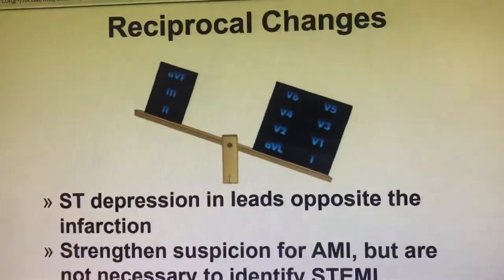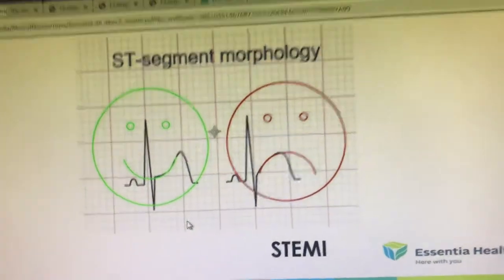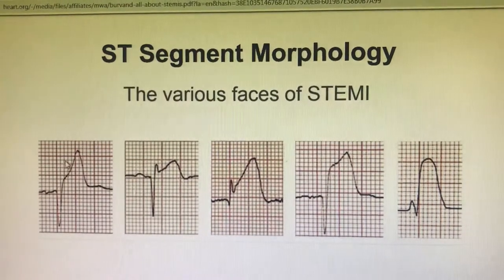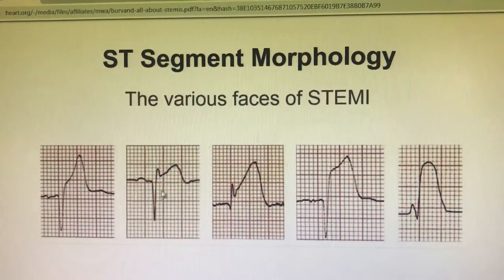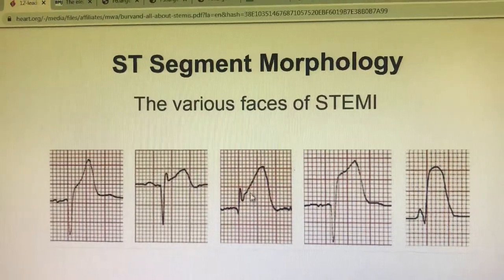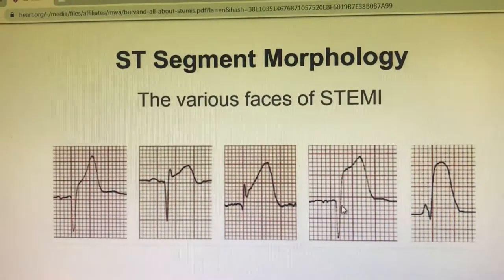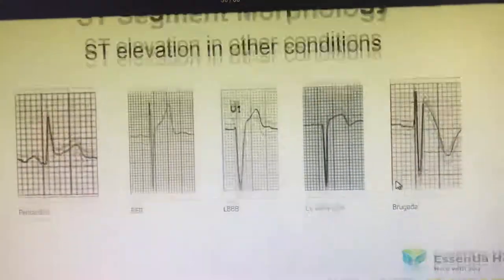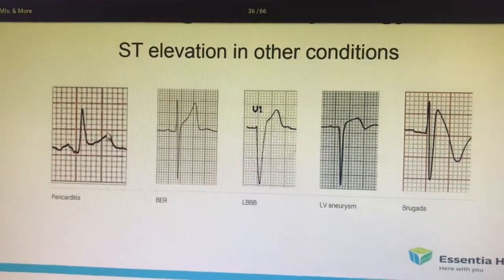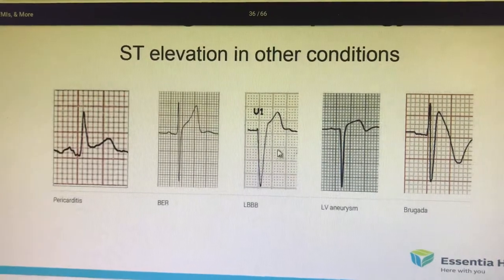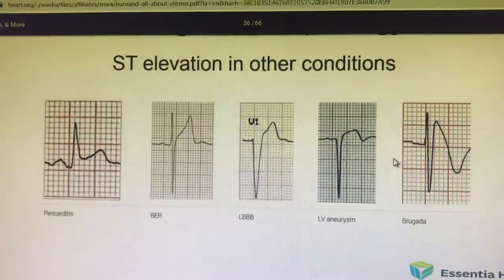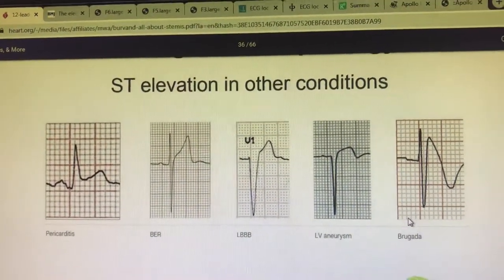Always look for reciprocal changes — it is very important. The ST segment morphology and the various phases of STEMI are shown here. You should recognize a narrow QRS with hyperacute ST elevation progressing through phases. In pericarditis, there will be PR segment depression with a concave-upward ST elevation. In left bundle branch block or LV aneurysm, there will be persistent ST elevation with QS complexes.